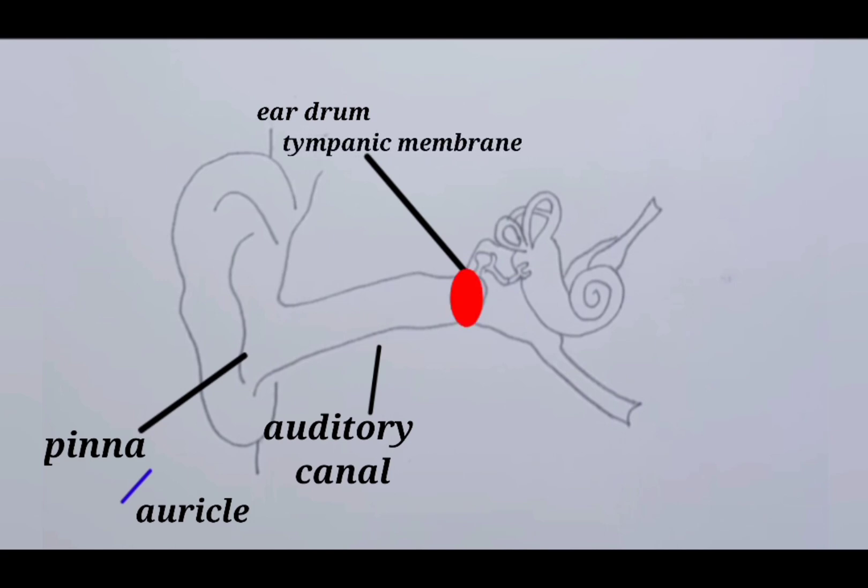Ear drum vibrations caused by sound waves move to a chain of tiny bones collectively forming the ossicles in the middle ear, consisting of three tiny bones: hammer, anvil, and stirrup. They transfer the sound vibration into the cochlea of the inner ear.